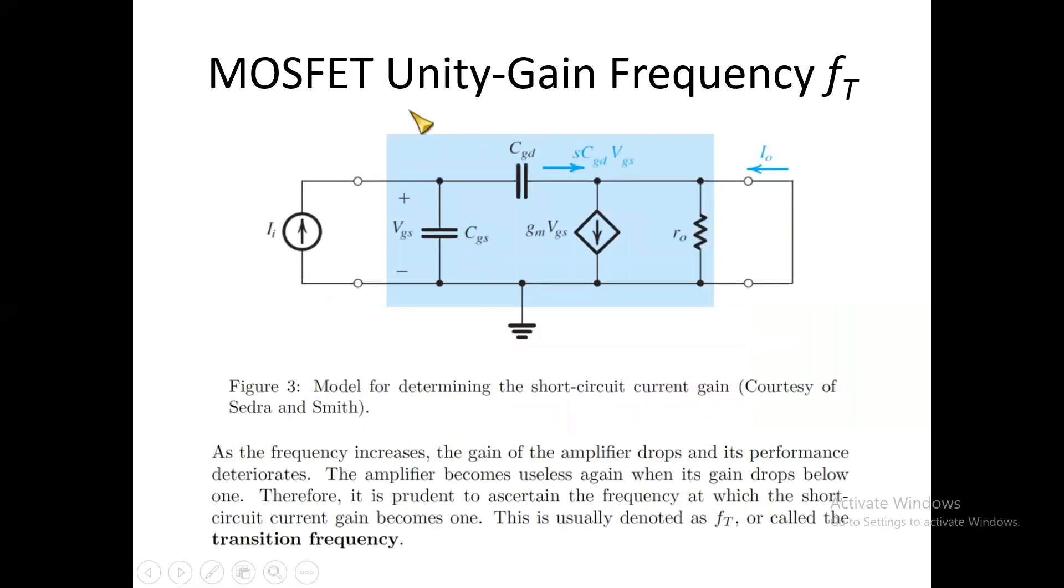Now the most important thing is the MOSFET unity gain frequency FT. This is the frequency at which the gain is exactly equal to one, also known as the transition frequency. This is a very important parameter because the gain of the amplifier should not fall below one. If the frequency of operation goes above this FT, then the gain will fall below one.